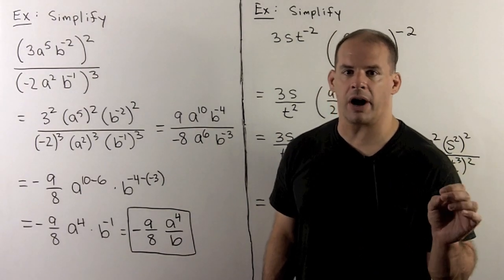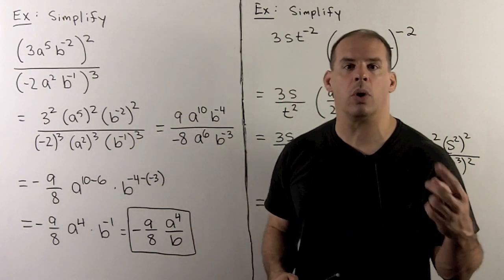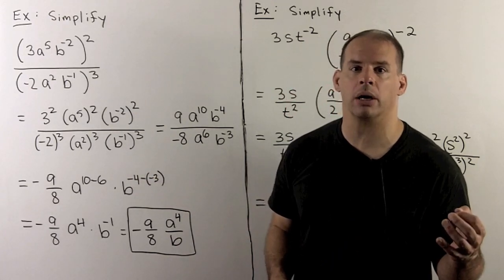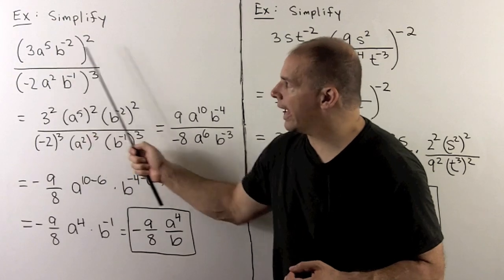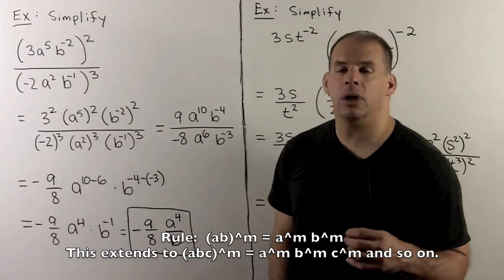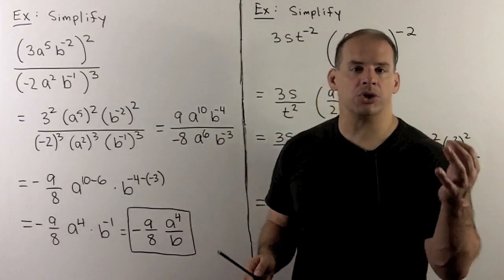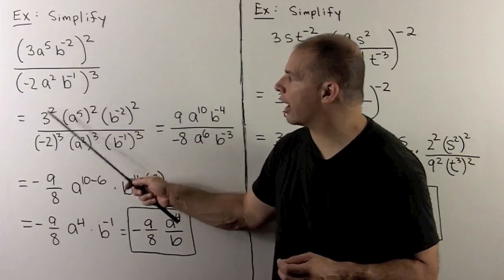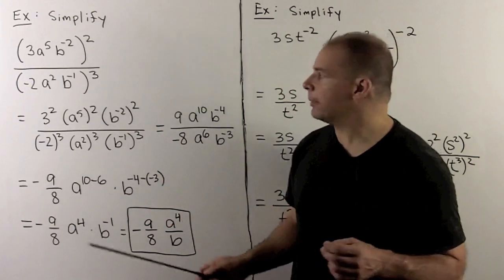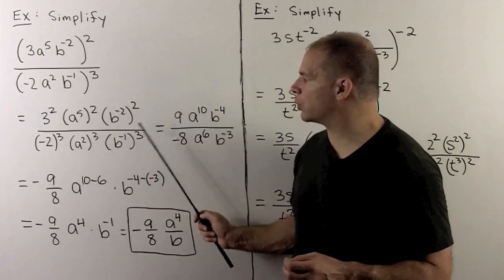Let's do some simplifications using variables. Simplify three a to the fifth, b to the minus two, quantity raised to the second power, divided by minus two, a squared, b to the minus one, quantity to the third power. If we have several terms raised to an exponent, we apply that exponent equally to each term. In the numerator, the square applies to each factor: three squared, a to the fifth squared, b to the minus two squared. In the denominator, we apply the cube equally: minus two cubed, a squared cubed, b to the minus one cubed.